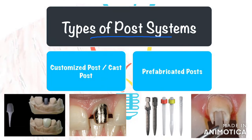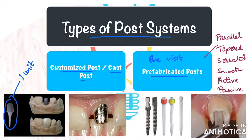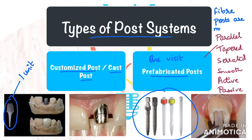Let us take a look at the different types of post systems available. They are essentially classified into two: customized posts and pre-fabricated posts. Customized posts are also popularly known as cast posts — these are custom made and fabricated with the help of a lab, and the coronal portion or core is attached to the post as one unit. Pre-fabricated posts involve placing the post and core restoration in one visit, and come in several forms: parallel, tapered, smooth, serrated, active, passive — all covered in part one. These posts are also available in different materials like stainless steel, titanium, composite, and fiber posts. Fiber reinforced post systems are the most popular and most commonly used.